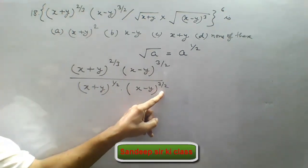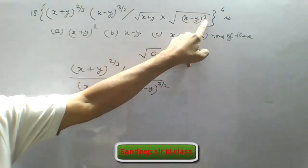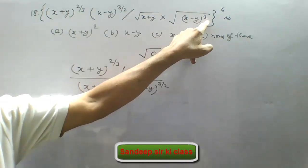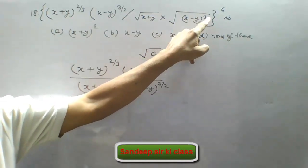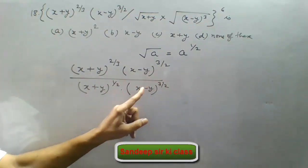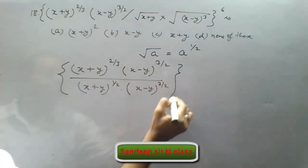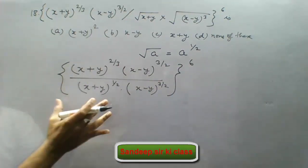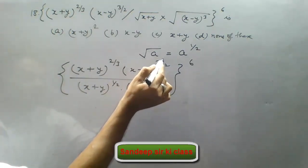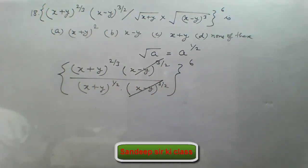Now 3 upon 2 we have written because here x minus y has power 3, and when we take the under root of it the power will be 1 upon 2. So powers when multiplied will give us power as 3 upon 2 for x minus y, and the whole power is 6. This is the simplified way. Now x minus y to the power 3 upon 2 in numerator and x minus y to the power 3 upon 2 in denominator are cancelled.